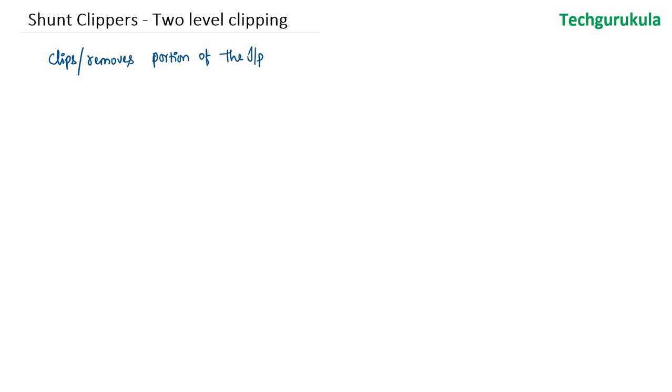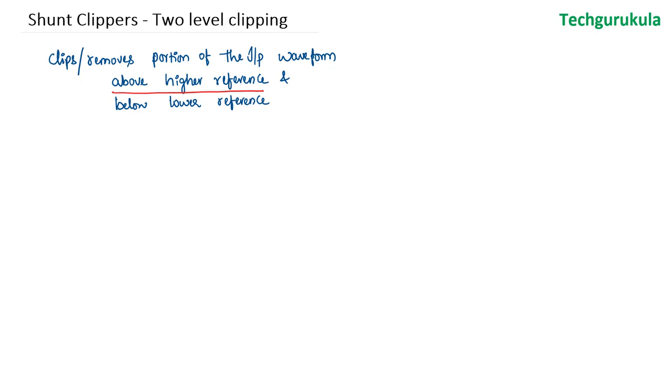In this video we are going to see shunt clippers which can do two level clipping. Two level clipping means it clips or removes portions of the input waveform above the higher reference and below the lower reference.